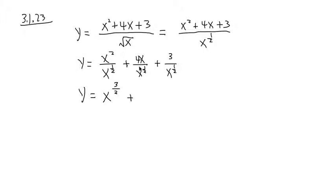So I have x to the 3 half plus 4x. This is x to the 1. 1 minus 1 half is 1 half. So I have 4x to the 1 half plus, I have no x right here, so I have 3. And the x to the 1 half is on the denominator. I can bring that up and I will get negative 1 half.